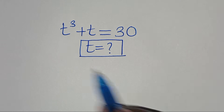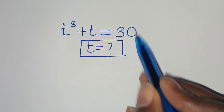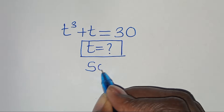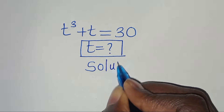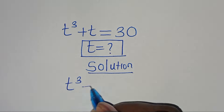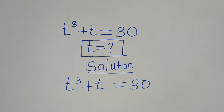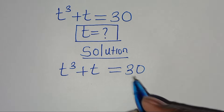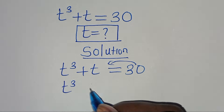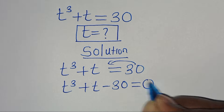Hello everyone, you are welcome to solve this nice algebra problem: t to the power of 3 plus t equals 30. What are the values of t? The first step is to take 30 to the left hand side, so we have t to the power of 3 plus t minus 30 equals 0.